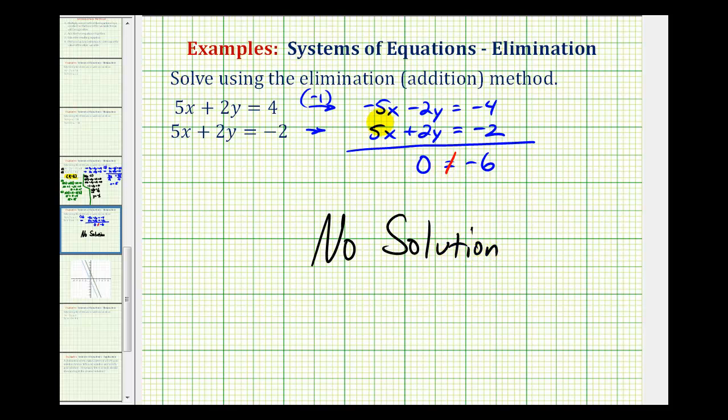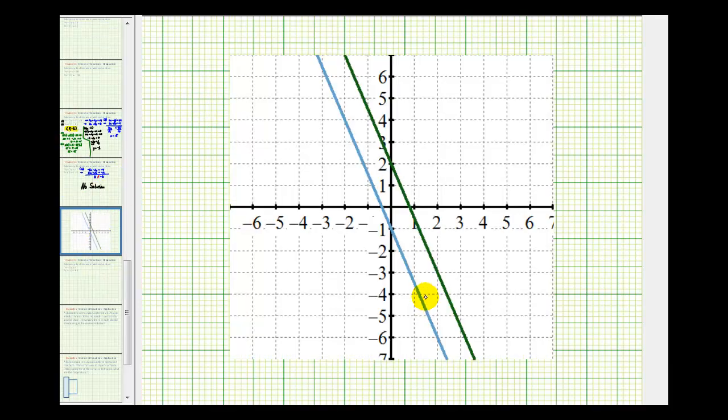A way to verify this would be to graph these two linear equations. When solving a system by graphing, the point of intersection would represent the solution. If we graph these two lines, notice they're parallel, which means they don't intersect, verifying the system has no solution.